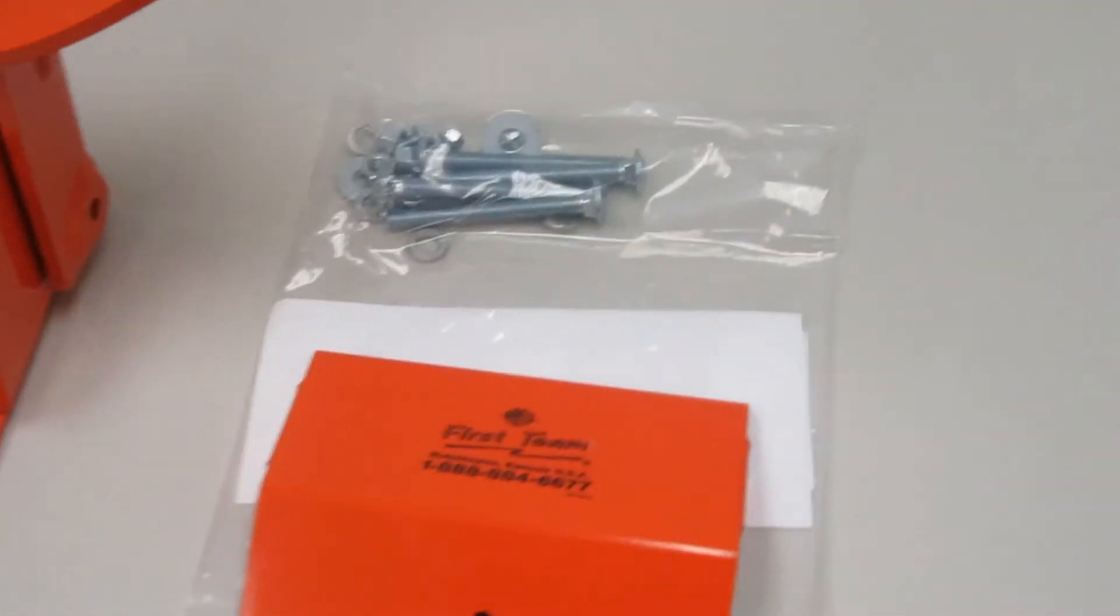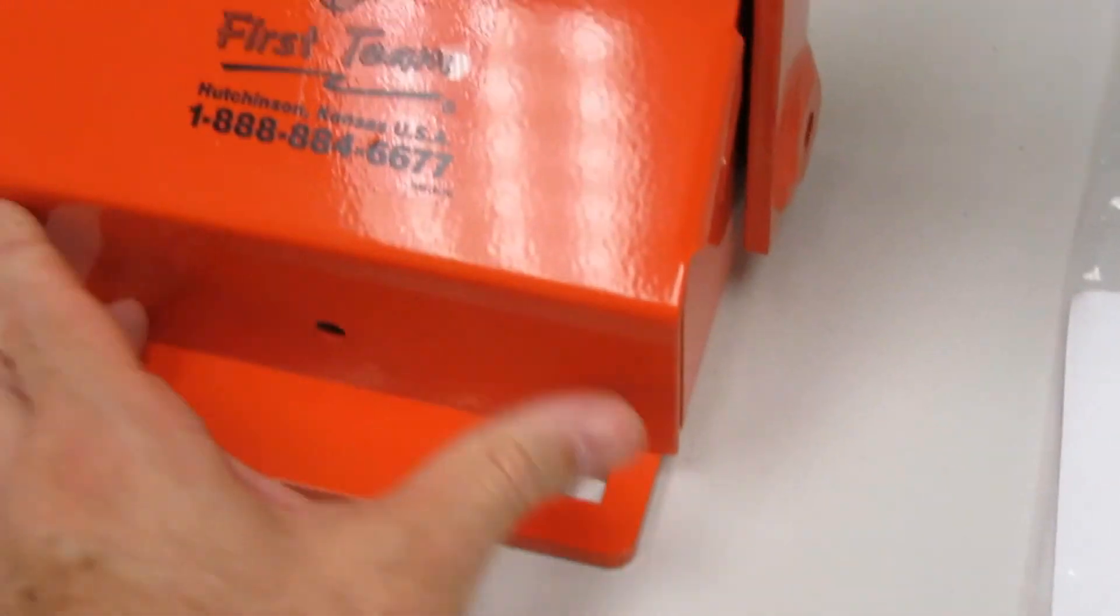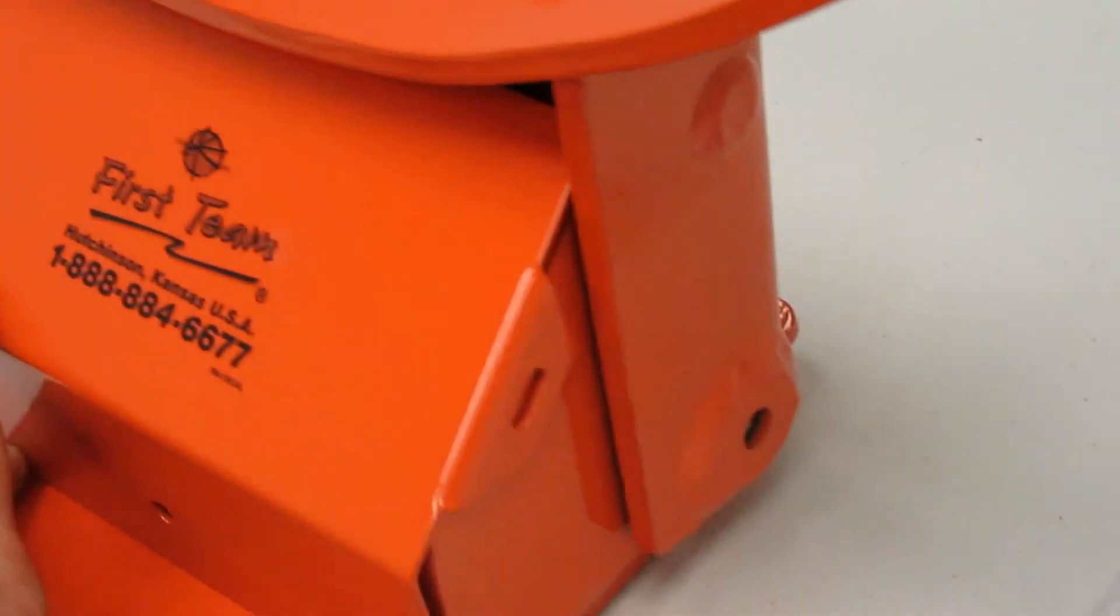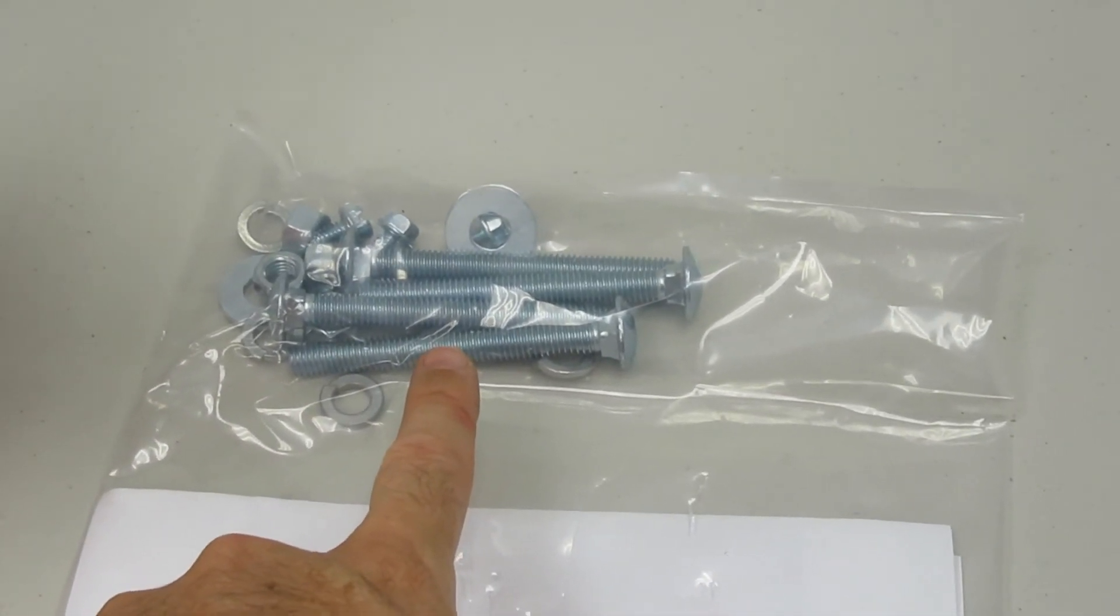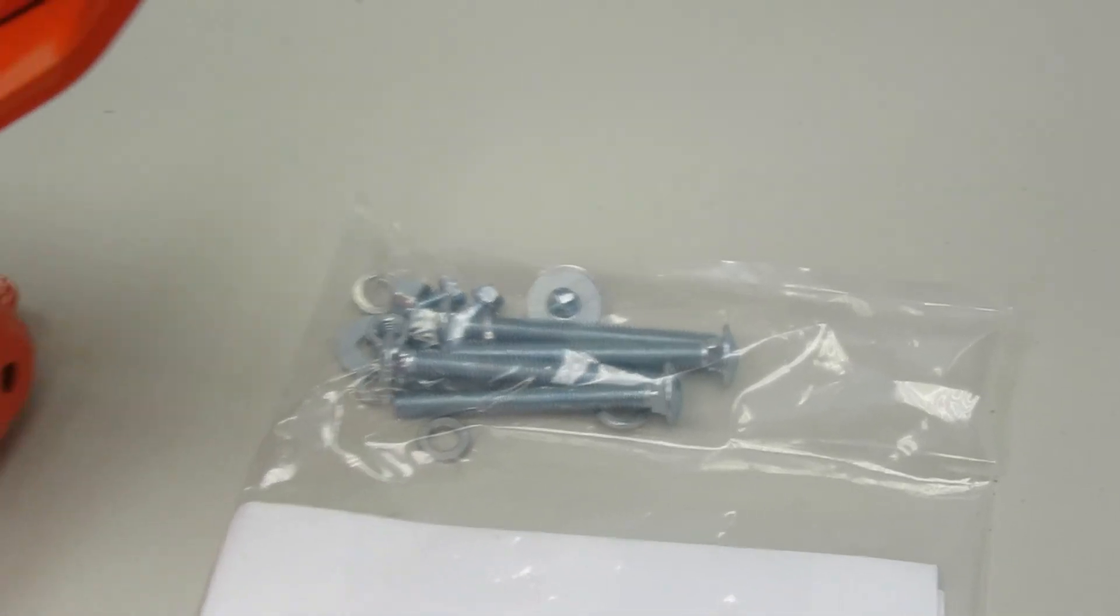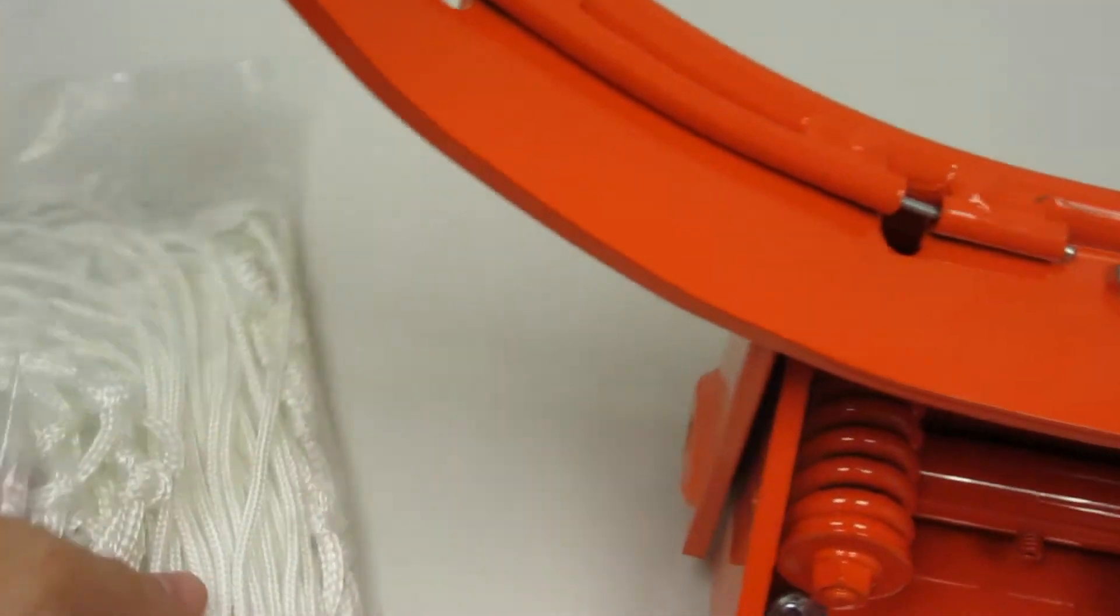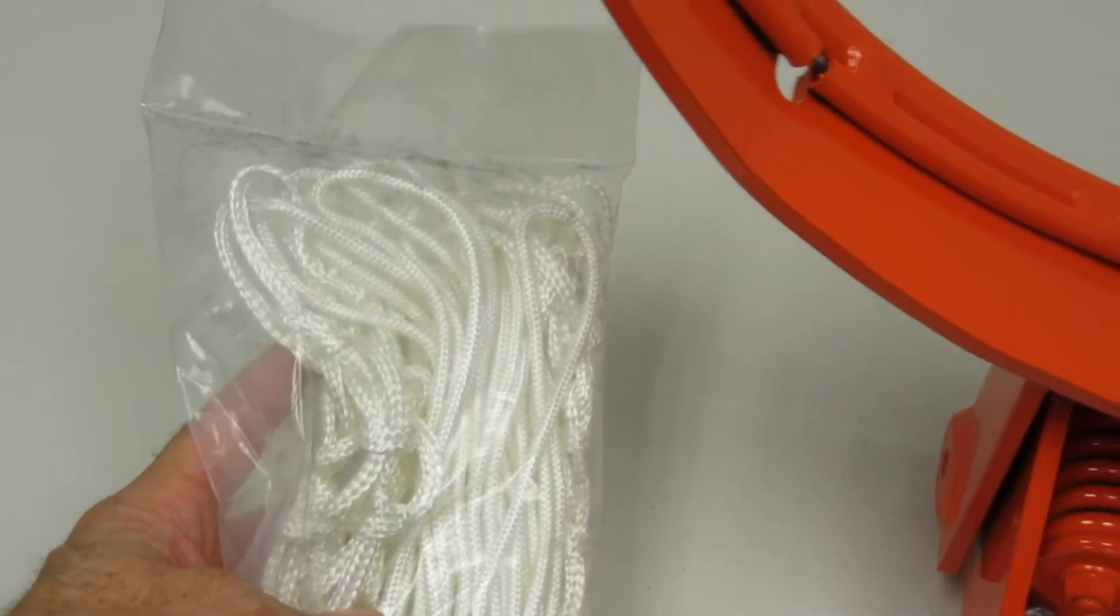The rim comes complete with cover plate to cover up the springs on the spring box. All of the hardware needed to attach the rim and the cover plate is included, as well as a heavy duty anti-whip competition net.